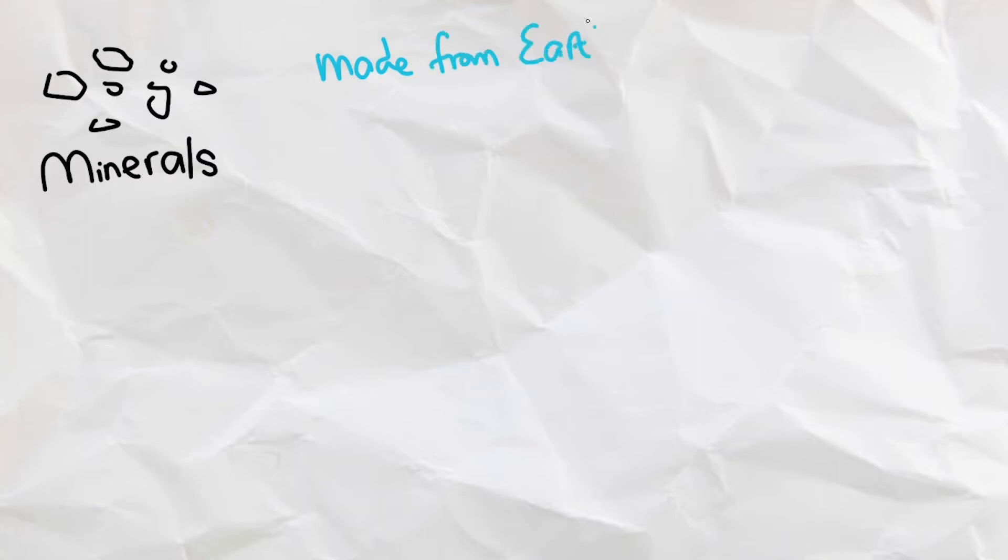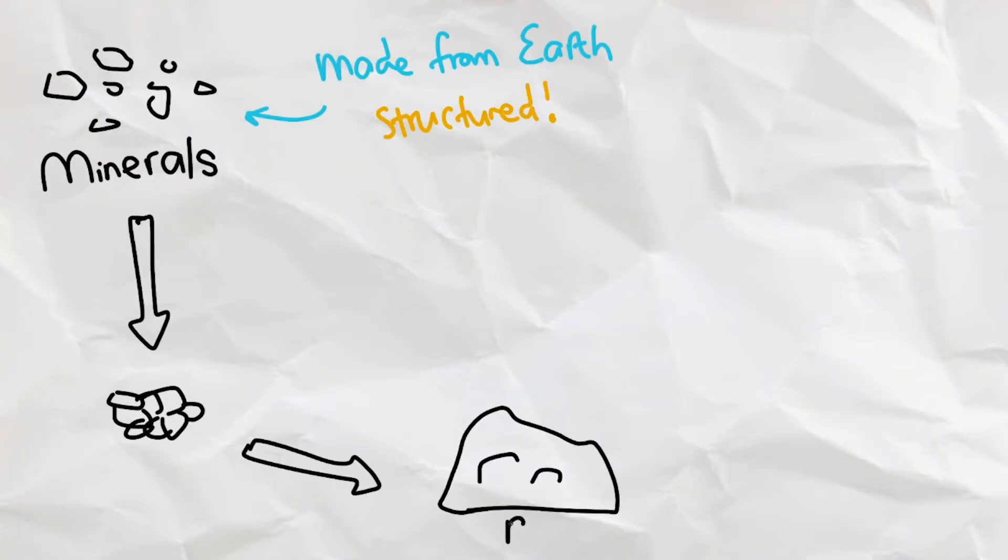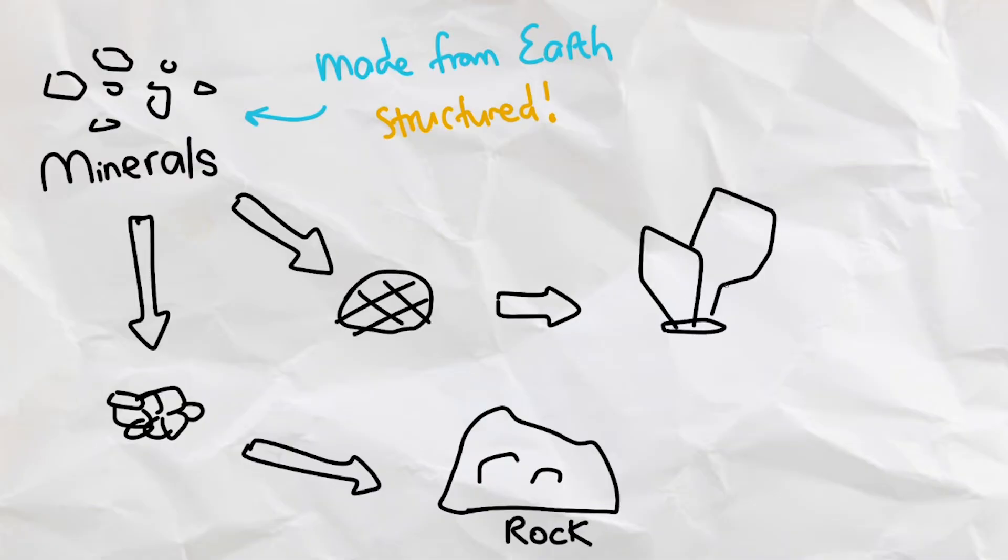Minerals are inorganic compounds formed by the earth and they have a structured atomic structure as well. Rocks are formed when different minerals merge together, but crystals are formed when certain minerals merge together in an orderly fashion.